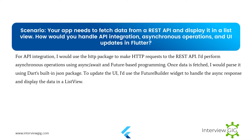Scenario: your app needs to fetch data from a REST API and display it in a list view. How would you handle API integration, asynchronous operations, and UI updates in Flutter? For API integration, I would use the HTTP package to make HTTP requests to the REST API. I'd perform asynchronous operations using async/await and future-based programming. Once data is fetched, I would parse it using Dart's built-in JSON package. To update the UI, I'd use the FutureBuilder widget to handle the async response and display the data in a list view.